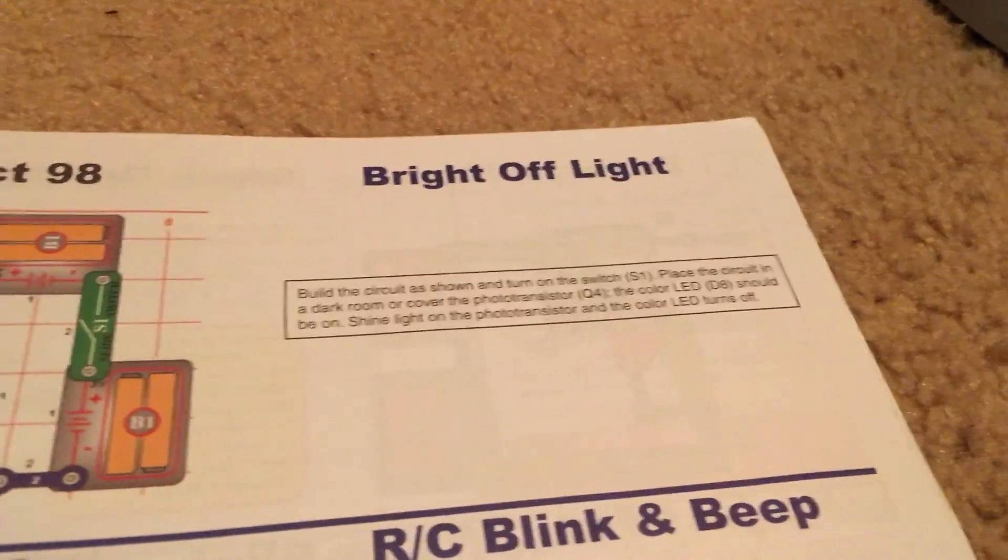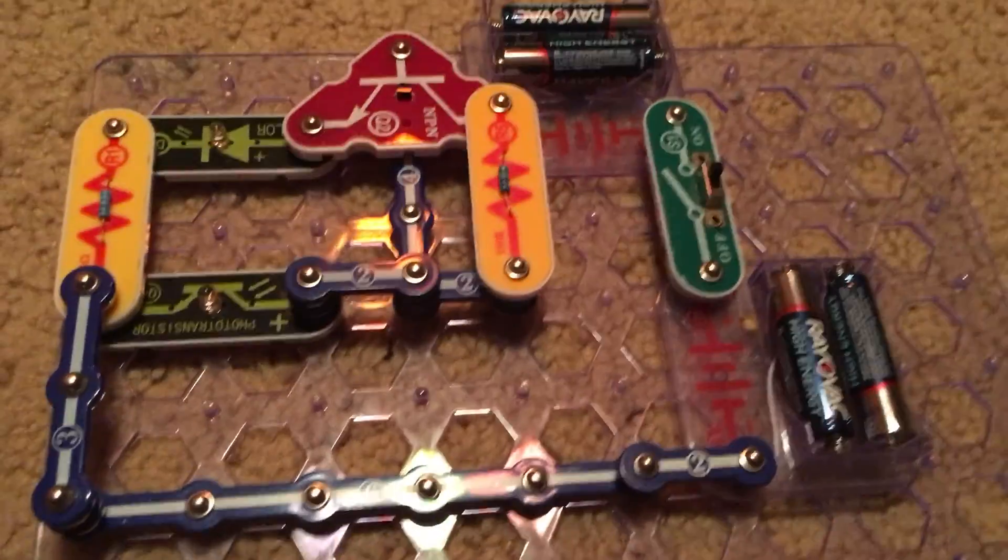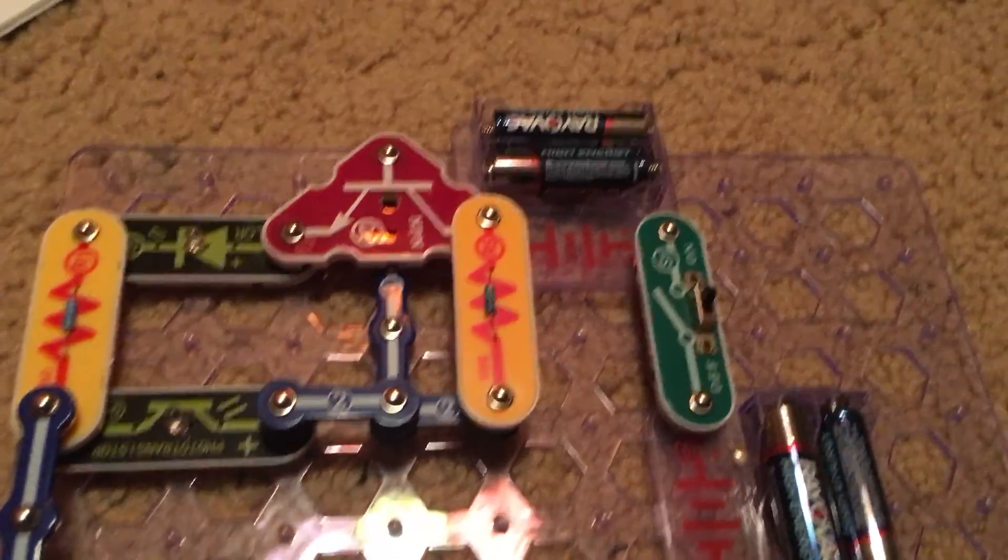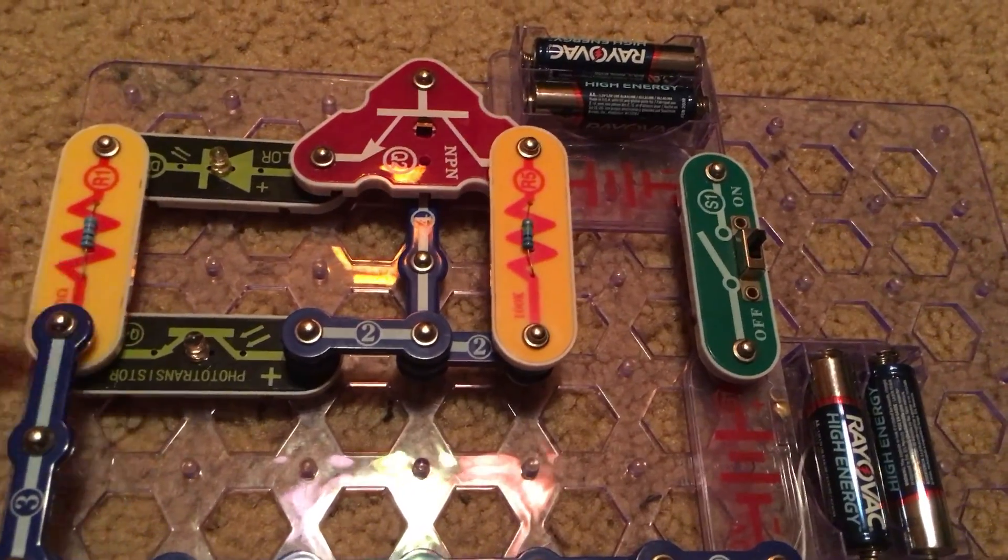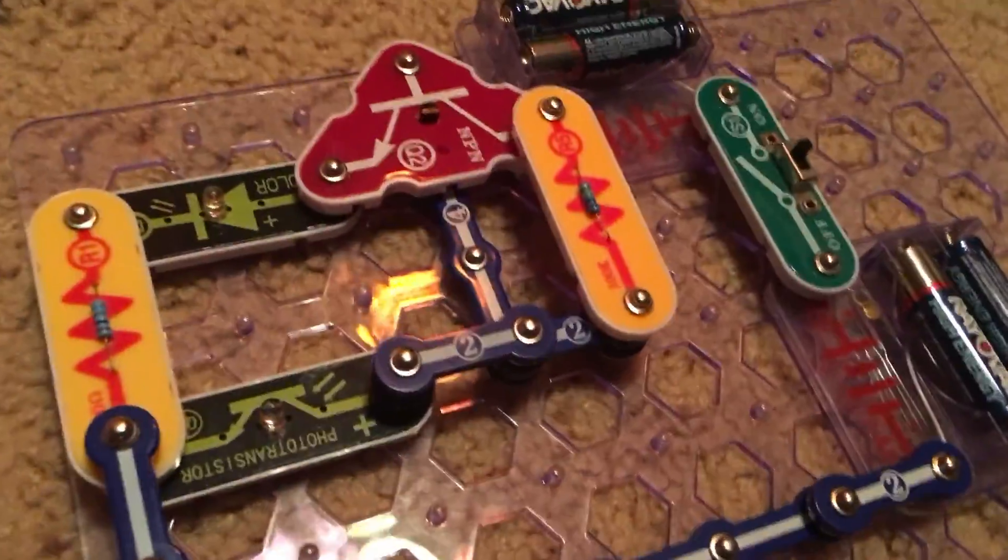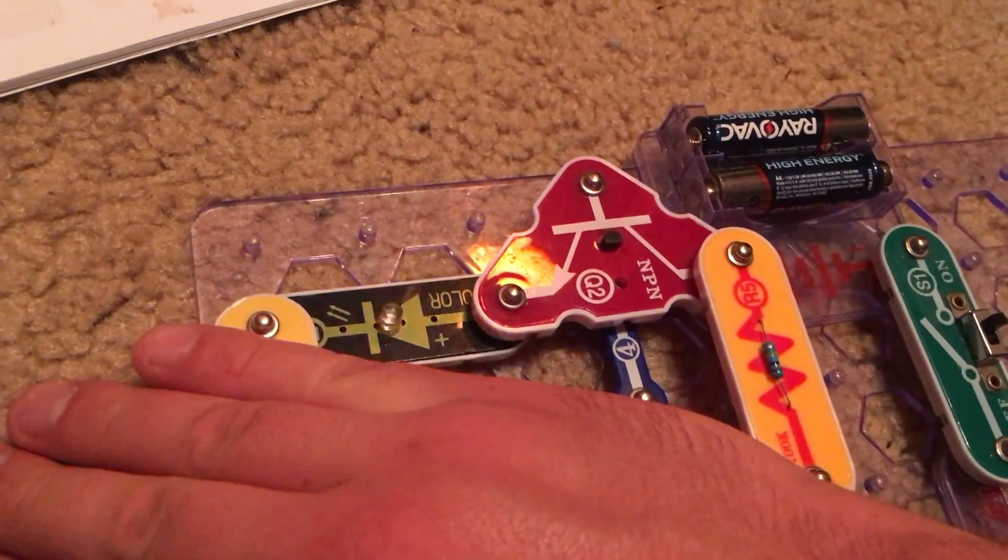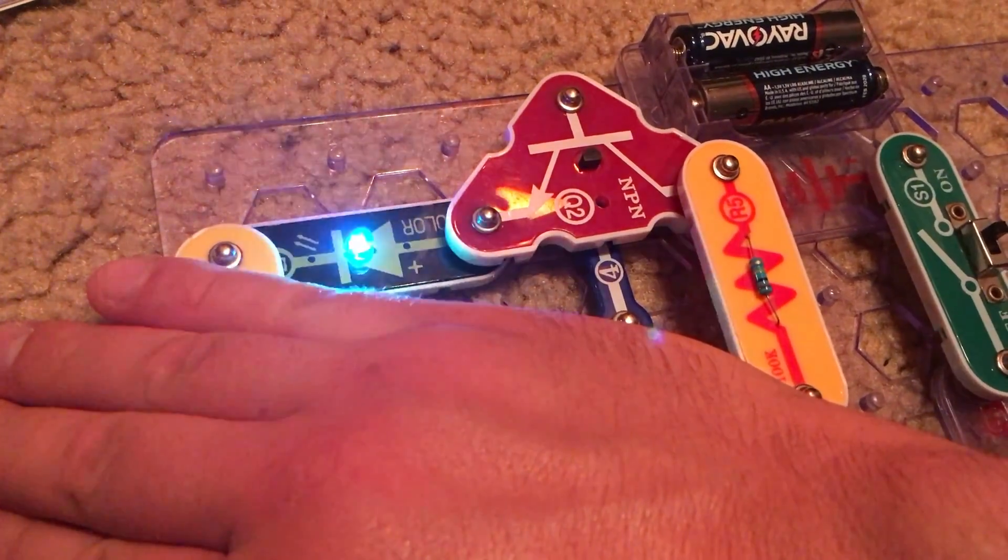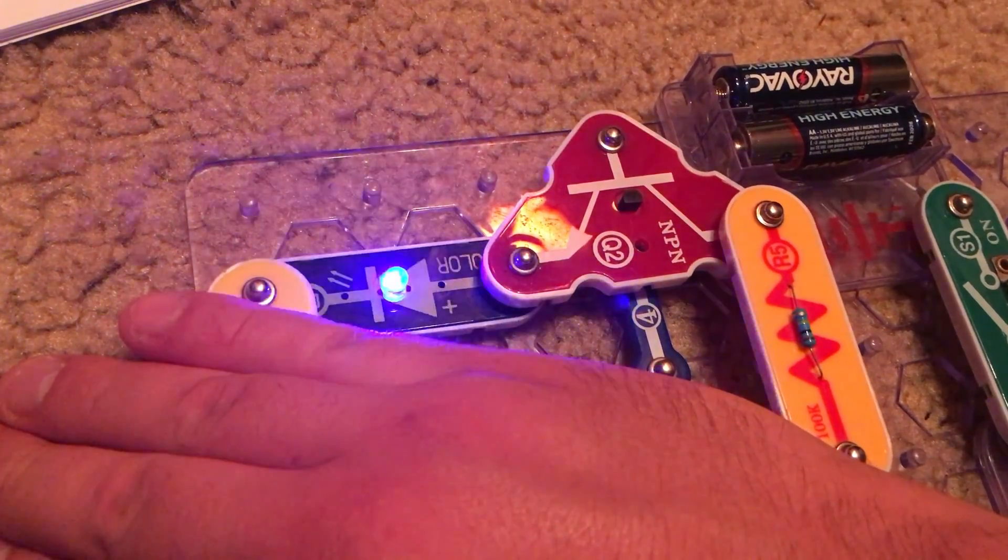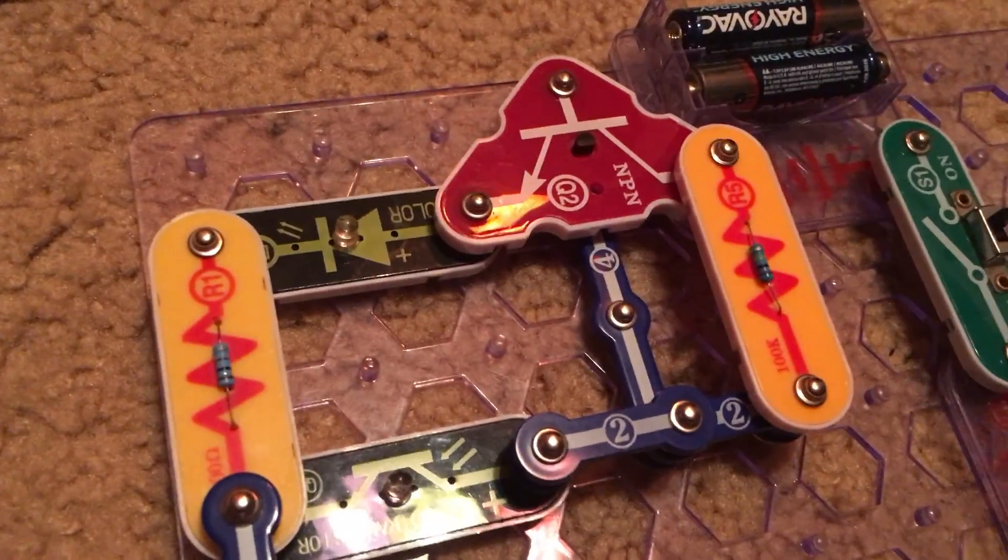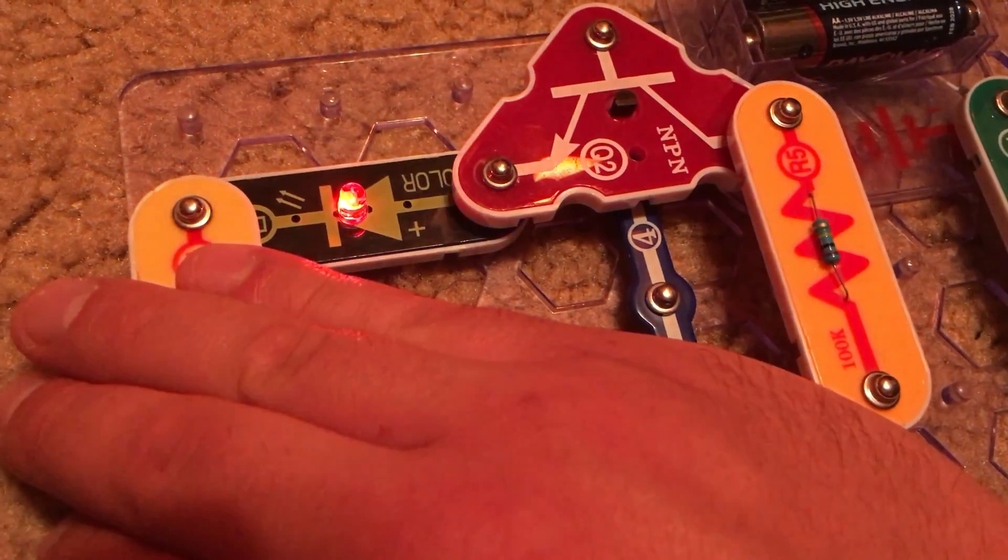98 is bright off light. We are going to use the following circuit here. And it is recommended that we either put the circuit in a dark room or cover the phototransistor which is right here. We are using the color LED and you can see that it is off now. But when I cover the phototransistor the color LED comes on and changes colors. Now I am going to take my hand off of the phototransistor and the color LED turns off. Cover it again and the LED turns back on.